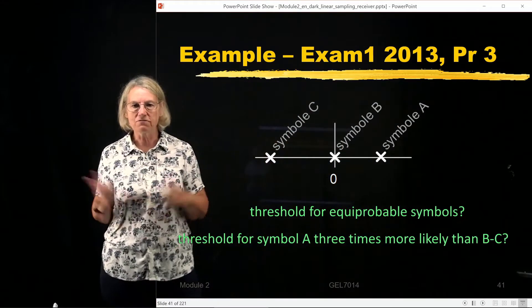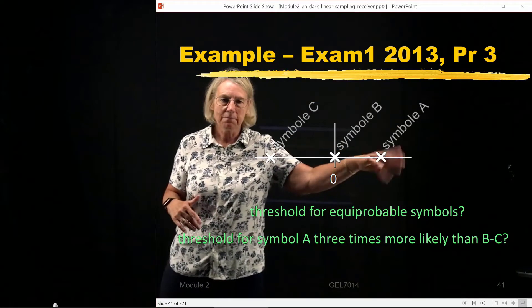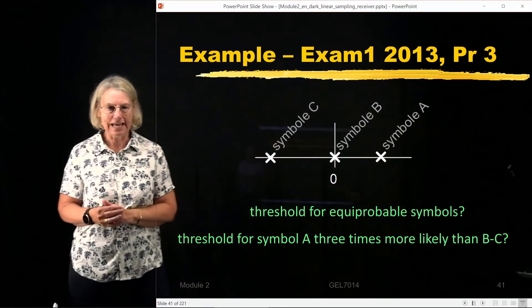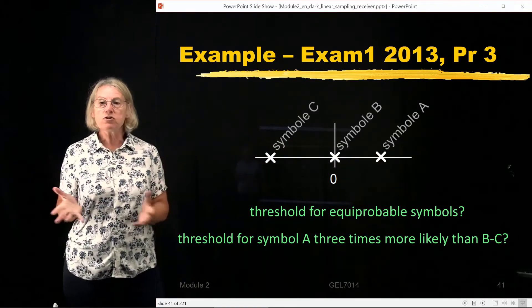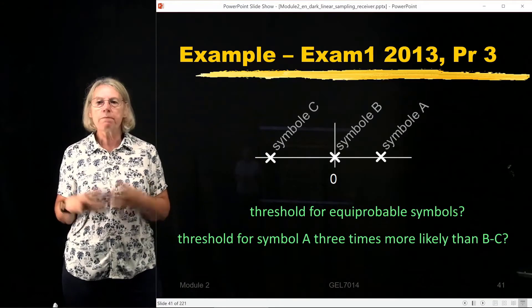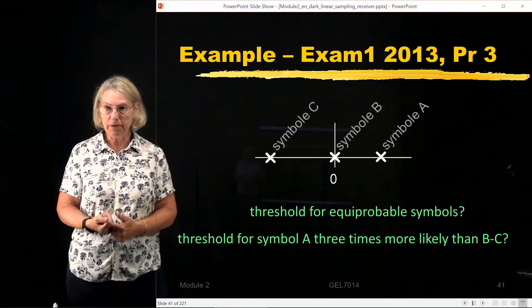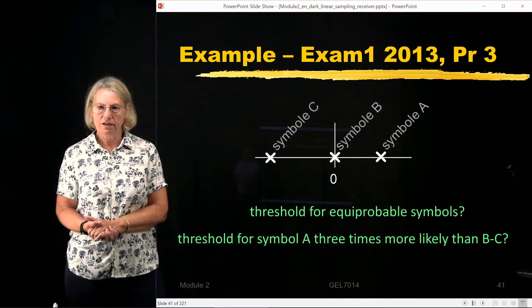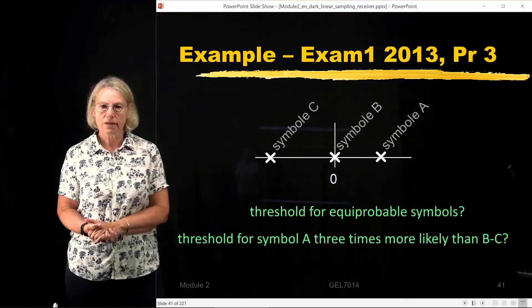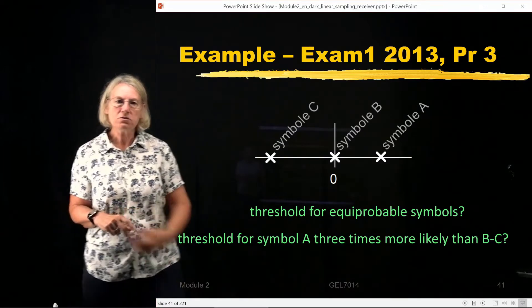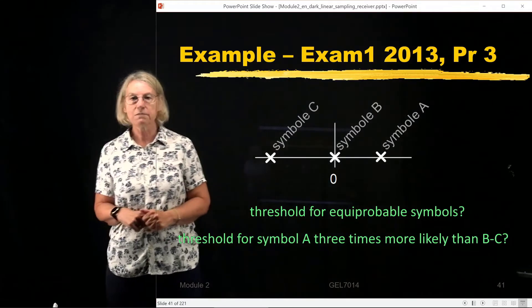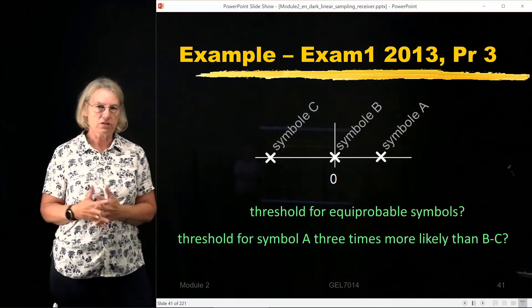Symbol B has mean of 0, symbol A has some positive mean, symbol C has a negative mean, a little bit more negative than the A. So the first question in the exam was, suppose that the a priori probability is the same for all three symbols, where would I put the threshold? And the next one we say, suppose that symbol A is three times more likely than B or C, where would I put the threshold then?